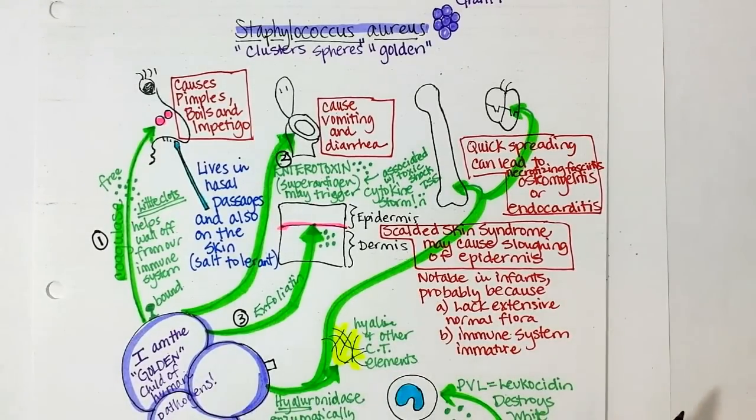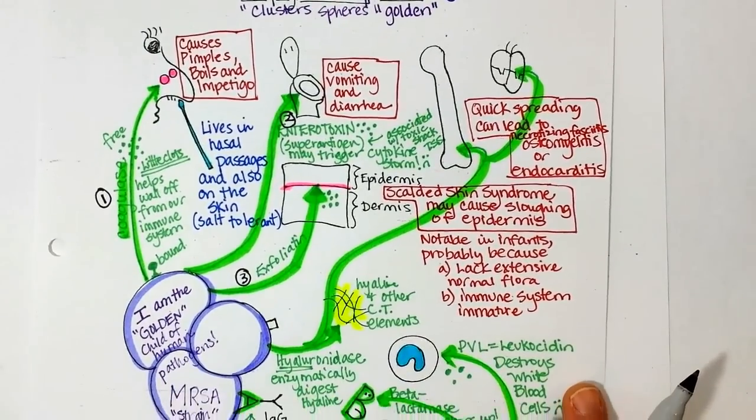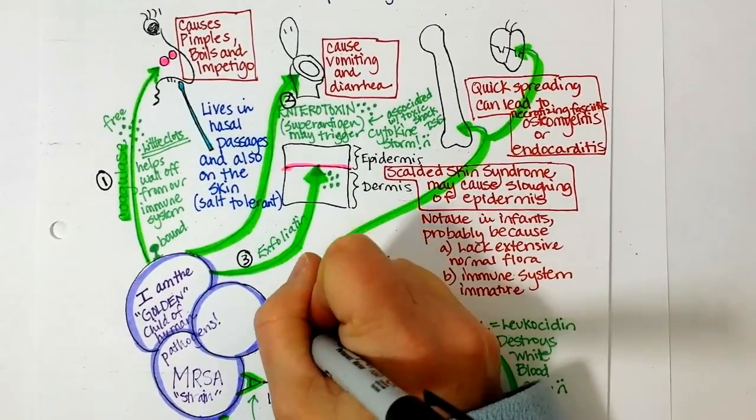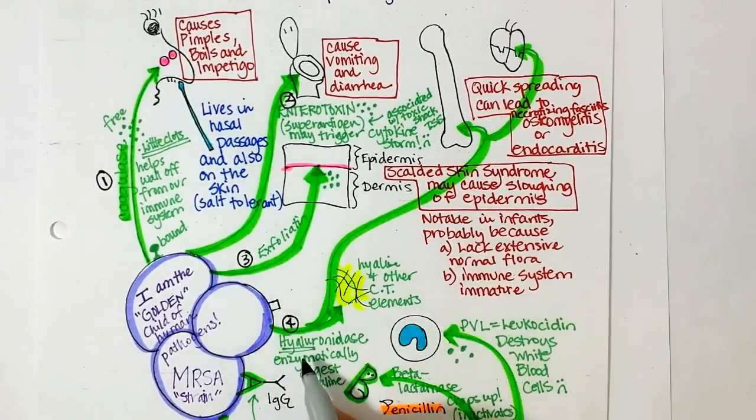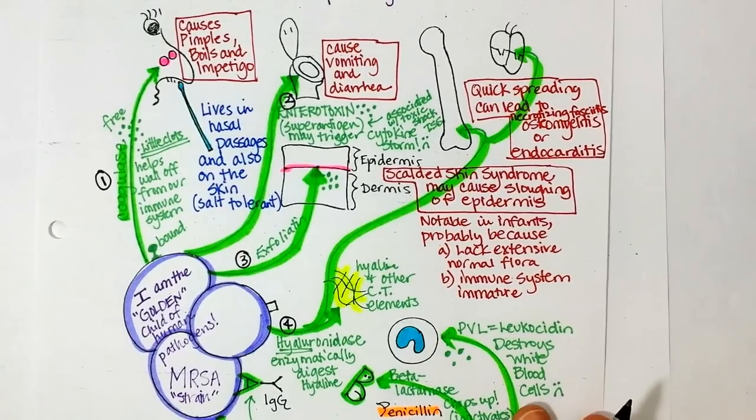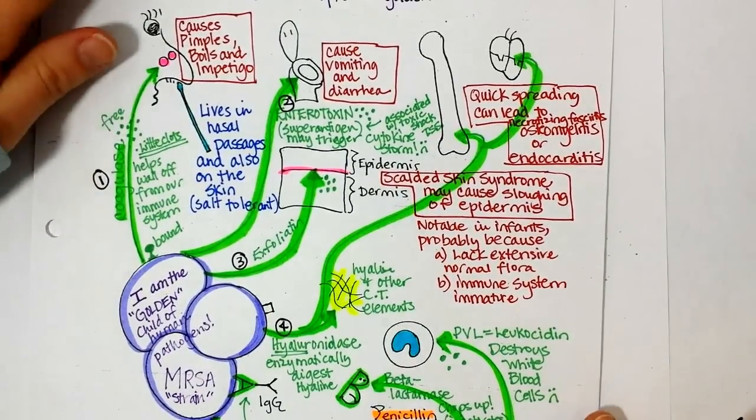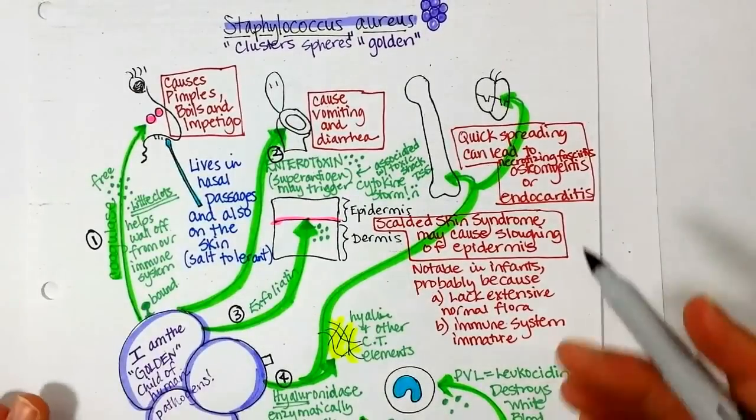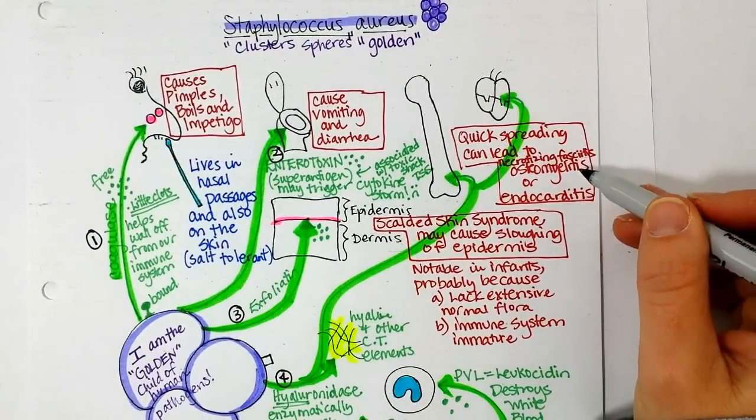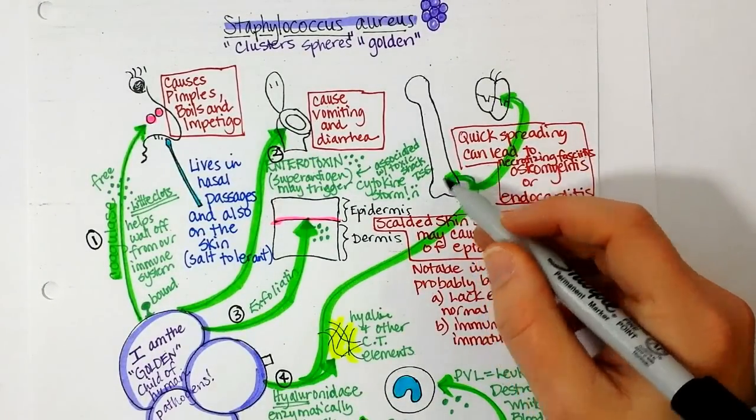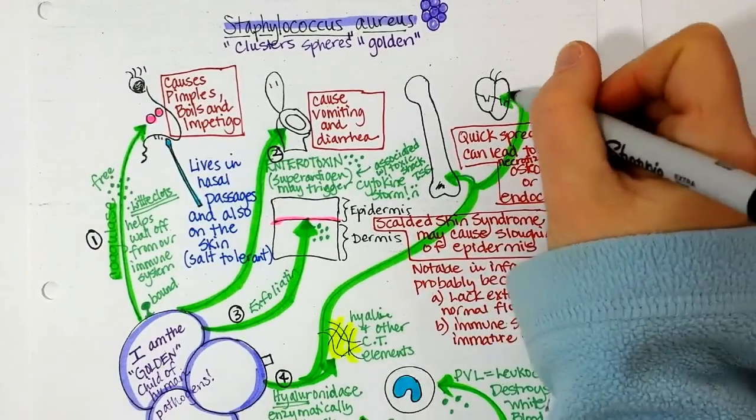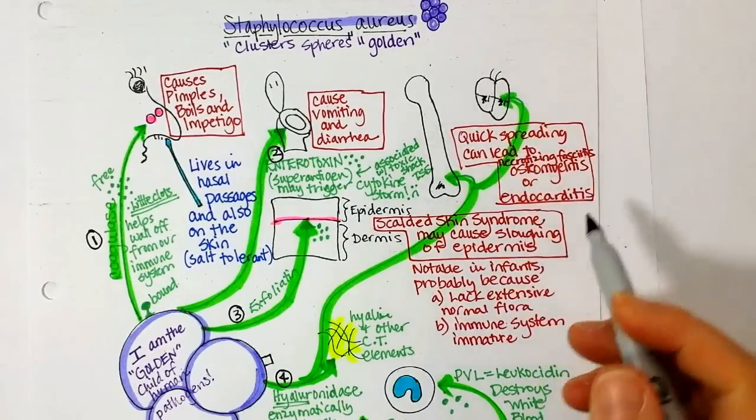And then hyaluronidase is the fourth one that we talked about. Well, it is famous for allowing staph aureus to spread quickly and eat its way through connective tissue. So for that reason, I am including problems like necrotizing fasciitis. Osteomyelitis, where the bone becomes infected. Endocarditis, where the bacteria is able to move to heart valves.